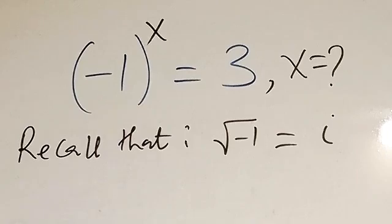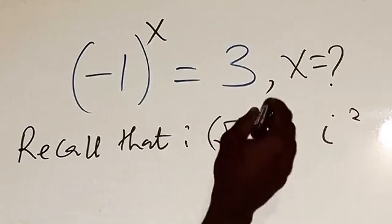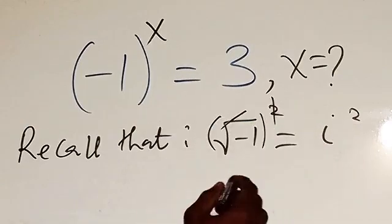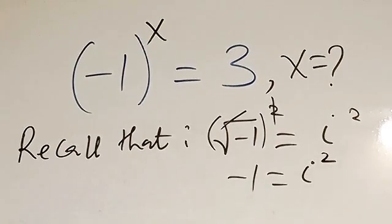So now I can square both sides. If I square both sides, you see that this becomes this. I'm going to be having minus one to be i squared, which is i to the power of two.